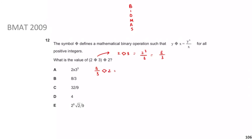Now we compute (8/3) ◇ 2 = (8/3)² / 2 = (64/9) / 2 = 64/18 = 32/9. This cannot be simplified further, so the answer is C.